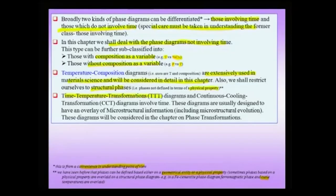Time-temperature transformation diagrams, which will be the basic focus of the next chapter, and a close cousin, the continuous cooling transformation diagrams, both involve time. These diagrams are usually designed to have an overlay of micro-structural information, and the very starting objective of these diagrams is to have micro-structural information overlaid. We also want to understand micro-structural evolution, which will be the topic of the next chapter on phase transformations.